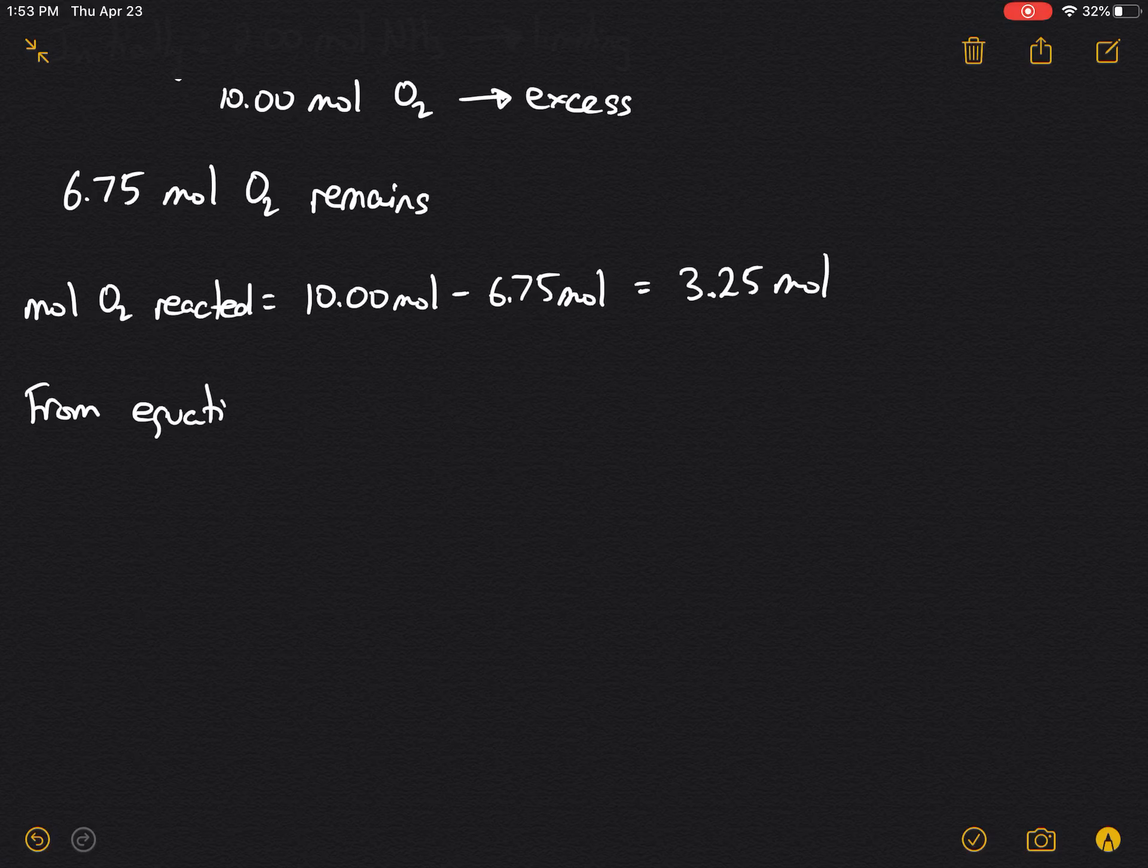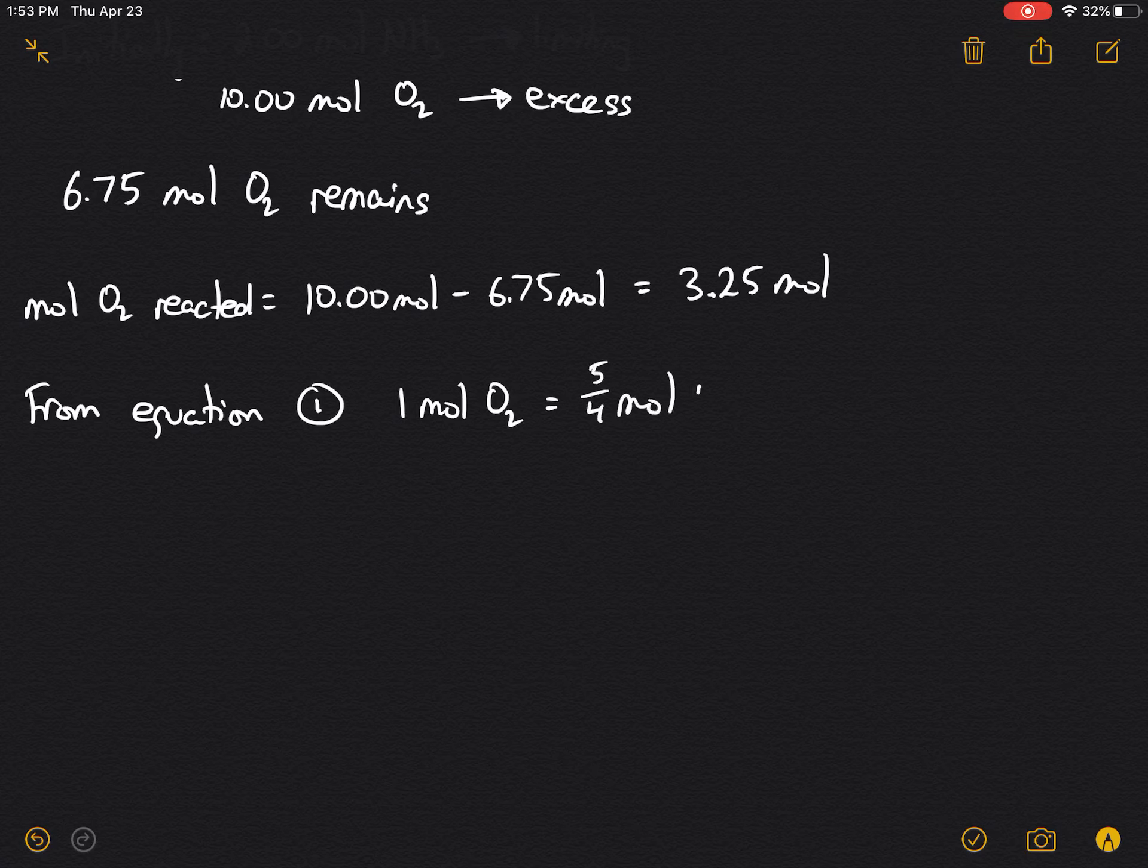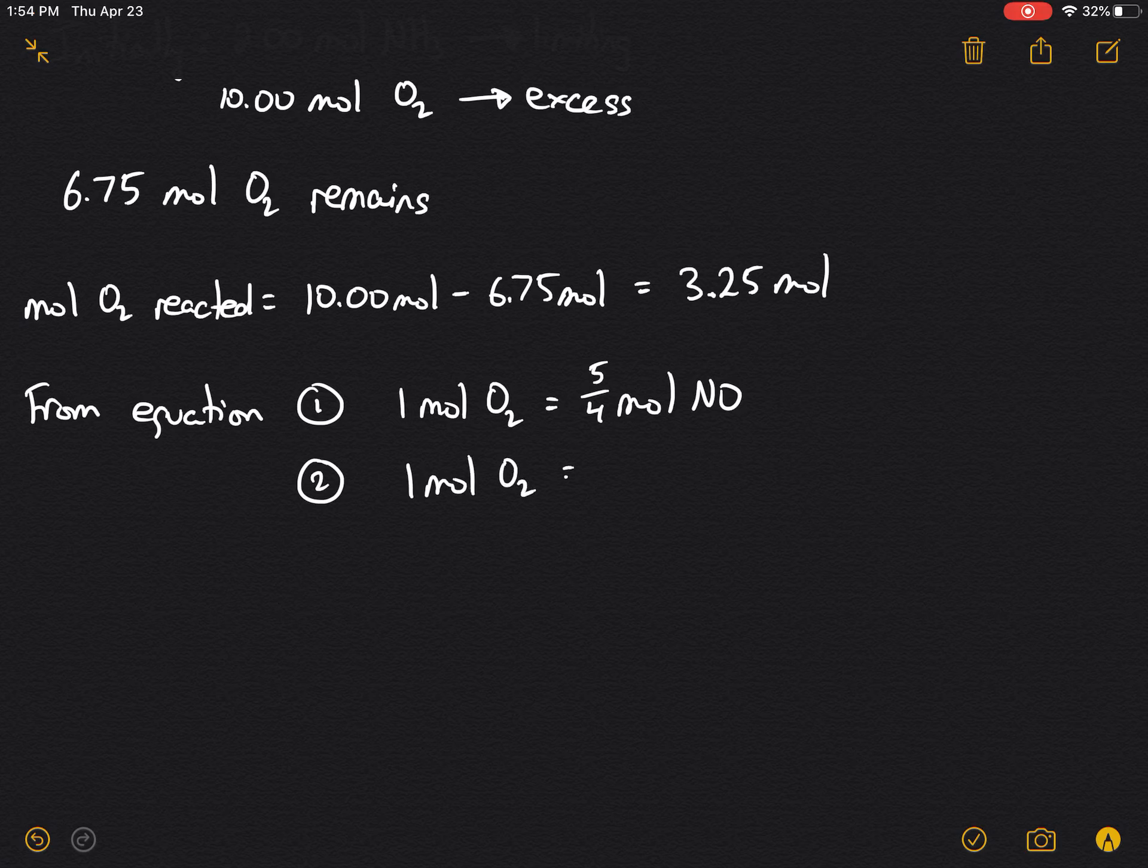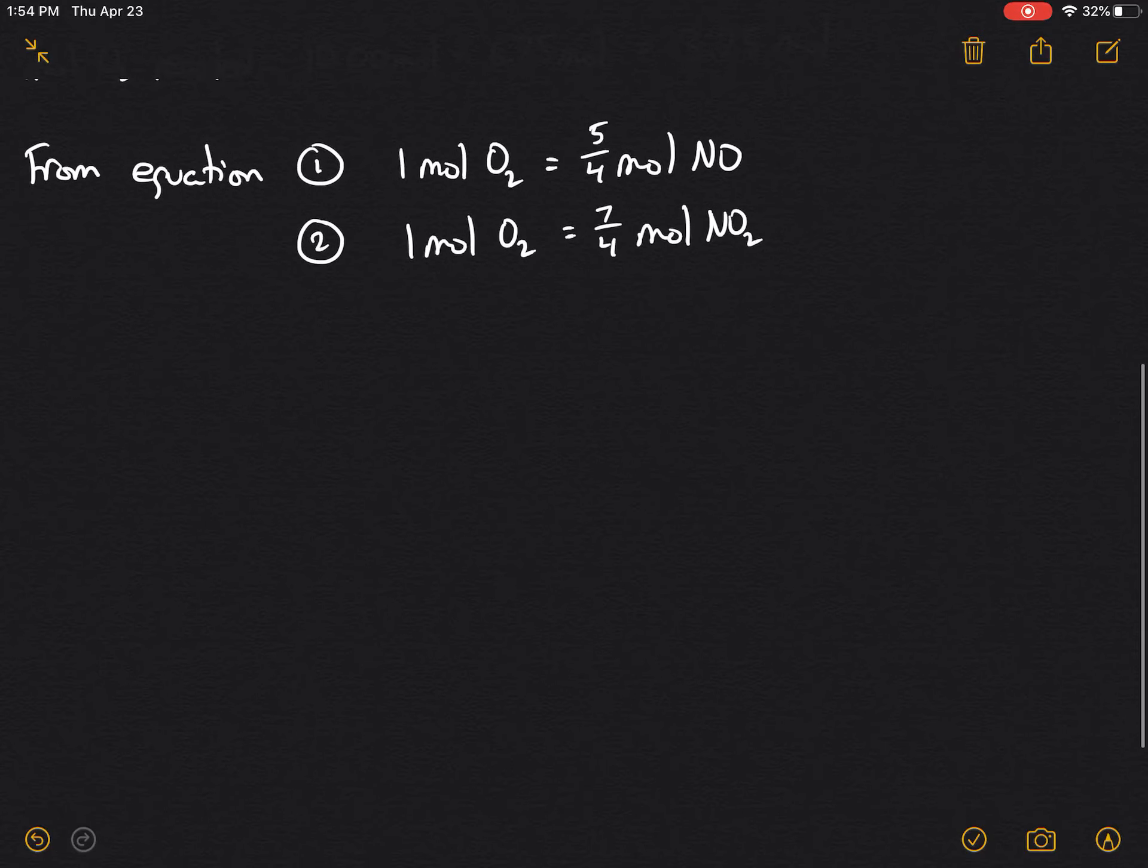So let's set up a relationship. From equation 1, we can set up a relationship that 1 mole of oxygen is equal to 5/4 mole of NO. And from equation 2, we can also find that 1 mole of oxygen is equal to 7/4 mole of NO2.